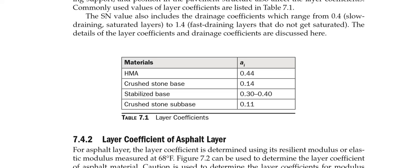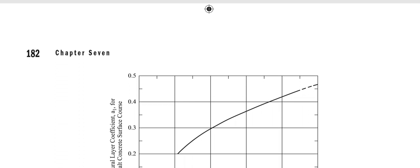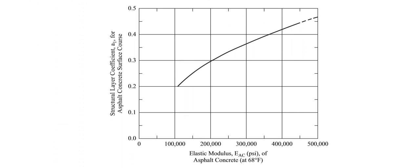To find the layer coefficient a1 for the asphalt layer, determine the elastic modulus of the asphalt concrete at 68°F, then use the chart. For example, if the modulus is 200,000 psi, go up and left on the chart to read approximately 0.30. If the modulus is 400,000 psi, the coefficient is approximately 0.42 to 0.43.